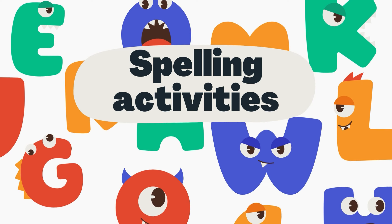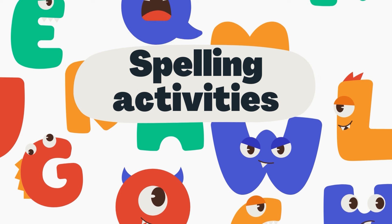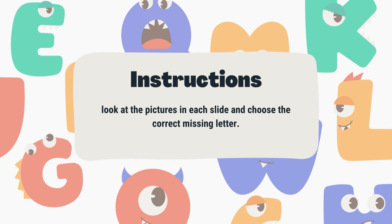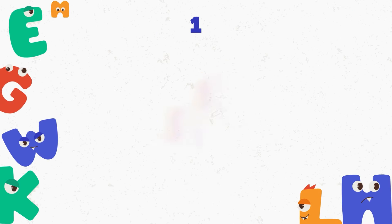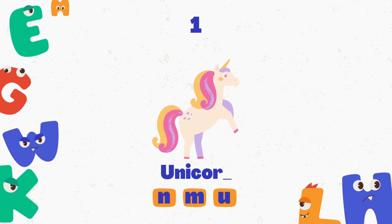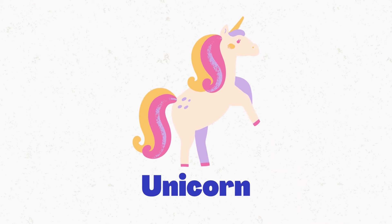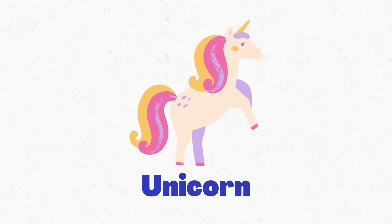Today we are going to play spelling activities. Instructions: look at the pictures in each slide and choose the correct missing letter. Number one: see the image and answer the missing letter. The answer is unicorn.